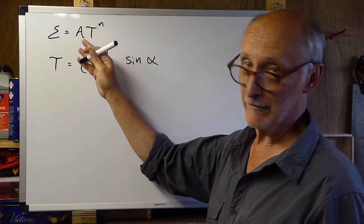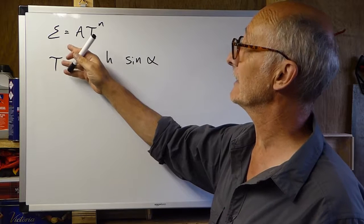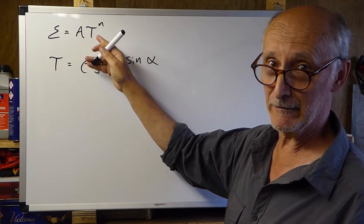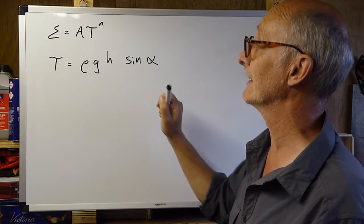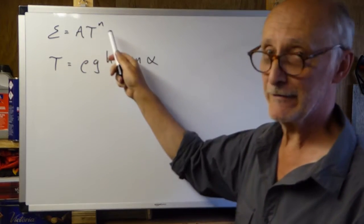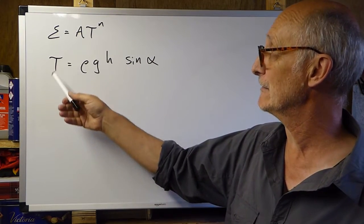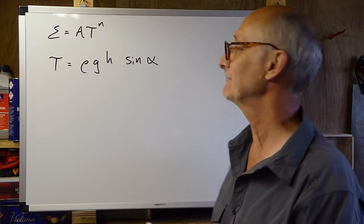So, Glenn's flow law tells us that the strain or deformation in the ice is a function of the hardness of the ice, it depends on temperature, and the applied stress, the force driving that deformation. The applied stress, where does that come from? Well, the shear stress equation tells us that the stress is rho g h sine alpha. So, what's that?